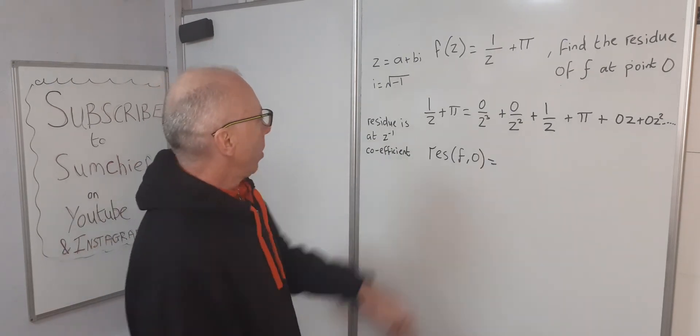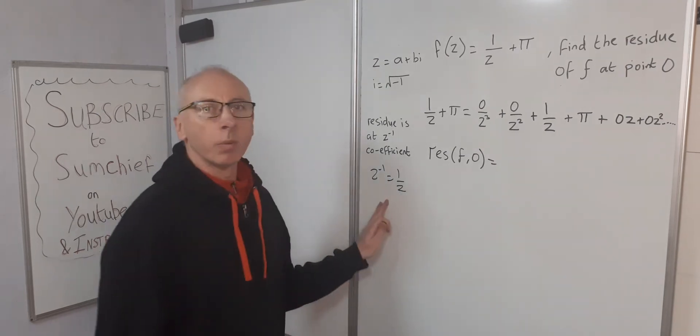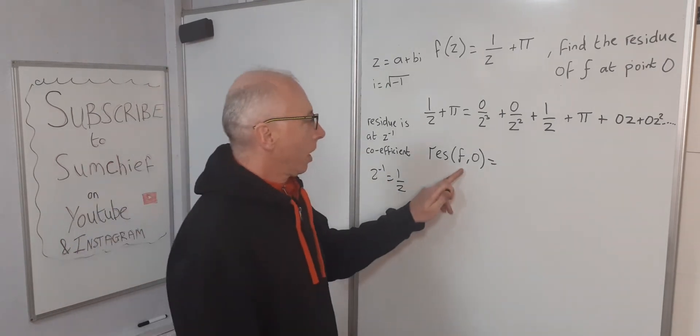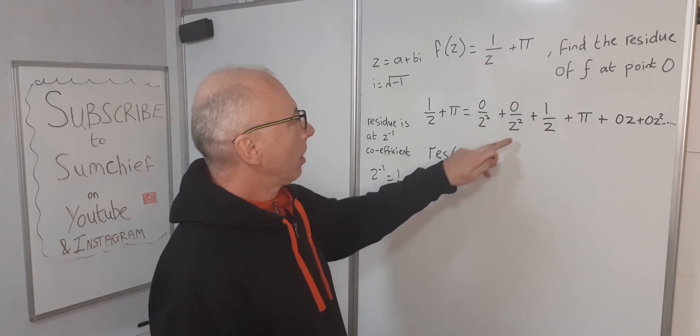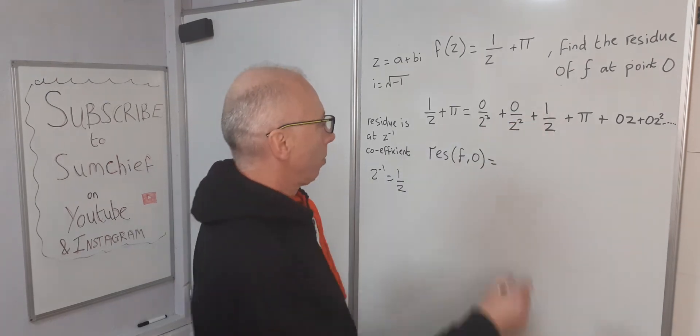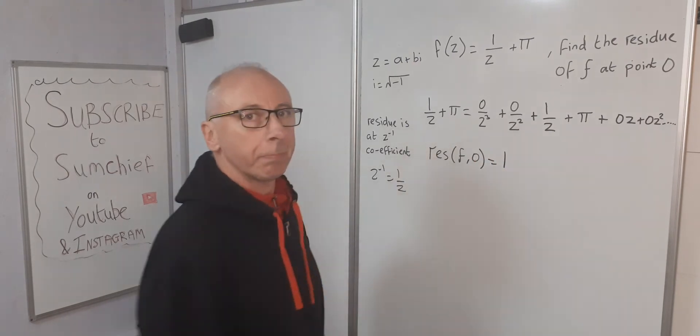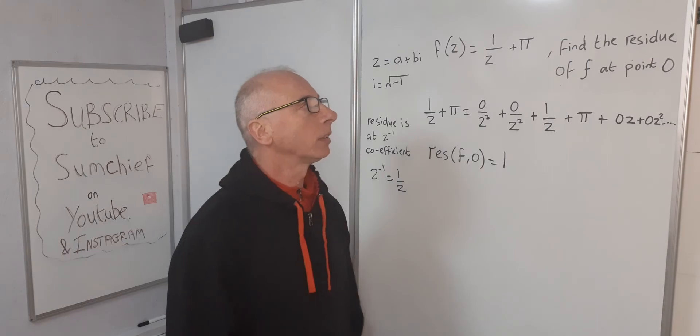z to the minus one is one over z. At f of zero, z to the minus one, the coefficient is one. So the residue of f comma zero is one. And that's our answer. Thanks.